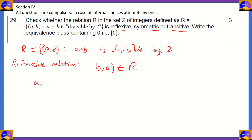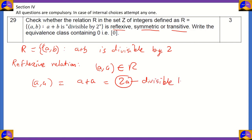So (a, a) refers to a + a, which equals 2a. Now 2a is divisible by 2, and since it's divisible by 2, you can see that (a, a) belongs to R. Therefore R is reflexive.